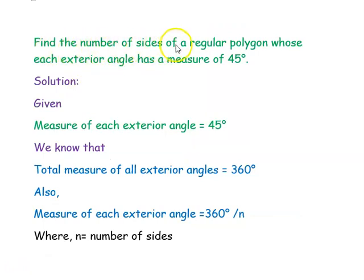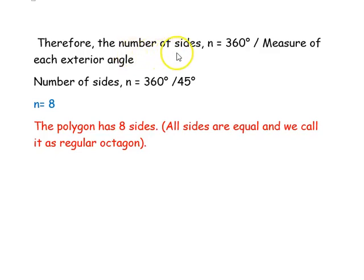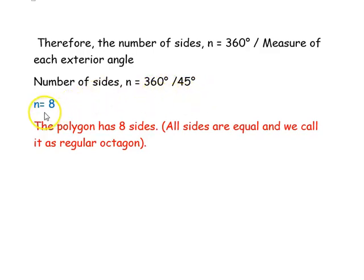The next question is: find the number of sides of a regular polygon whose exterior angle has a measure of 45 degrees. The given measure of each exterior angle is 45 degrees. Since it is a regular polygon, all angles and sides are equal. We know that each exterior angle = 360° ÷ n. Rearranging, n = 360° ÷ measure of each exterior angle = 360° ÷ 45° = 8.